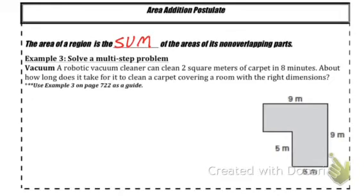Alright, this next example could get a little tricky depending on how good your eye is. The area addition postulate states that the area of a region is the sum of the areas of its non-overlapping parts.